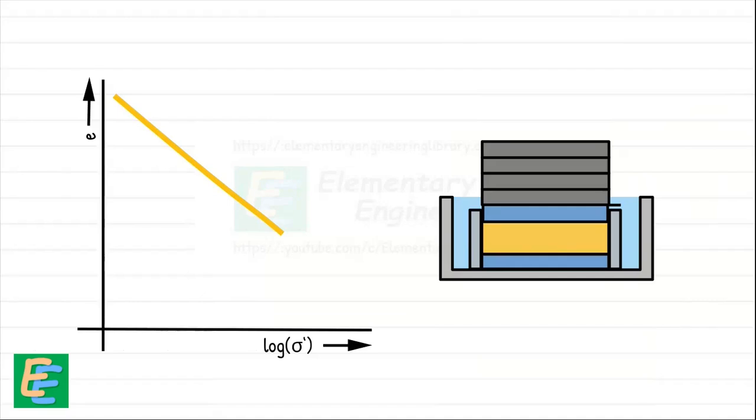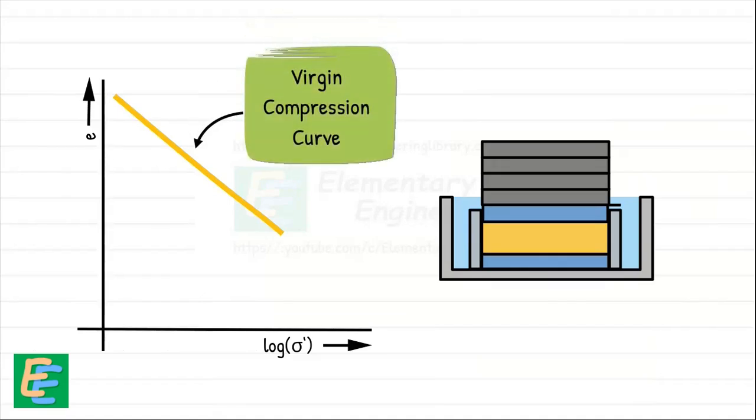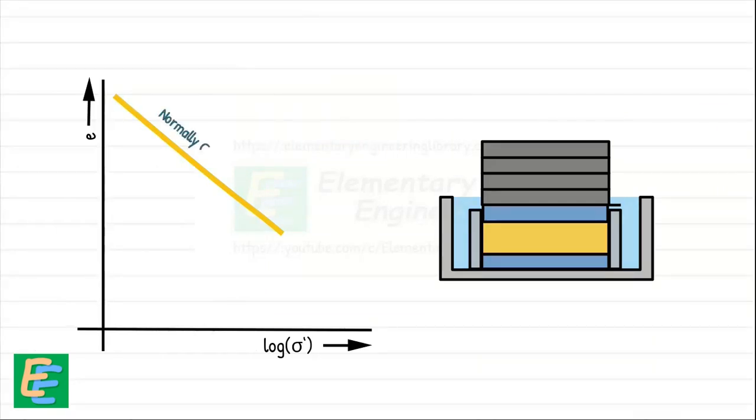This line is known as the virgin compression curve. In this part of the curve, soil is in normally consolidated state as the current effective stress is the maximum that it has ever experienced. Let's denote this compression curve as AB.